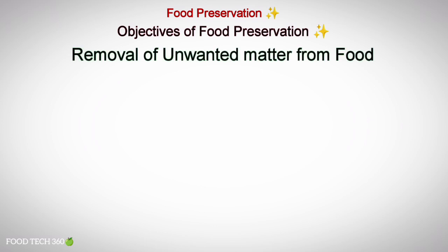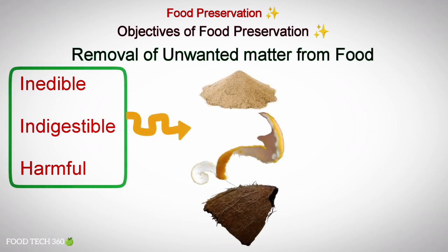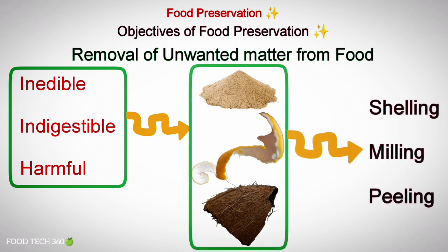Now let's see the objectives of food preservation. The first objective is the removal of unwanted matter from food. Unwanted matter may be inedible, indigestible or harmful to health — such as husk from grain, the skin of some vegetables, coconut shells, etc. The unwanted matter has to be removed by different processes including shelling, milling, peeling, etc.